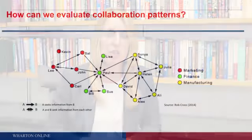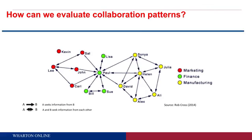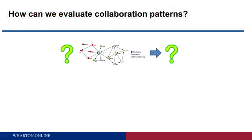We've got our network map, we know some things about it, but is it good or is it bad? Are people doing what they should be doing in terms of collaborating or not? Evaluating collaboration networks is where the rubber really starts hitting the road in terms of getting some value out of all these tools and techniques that we can use to analyze collaboration. There are two main questions we can look at — probably the two most important ways to use network tools and techniques to evaluate collaboration inside organizations.